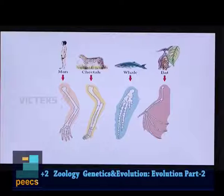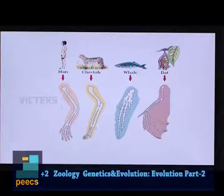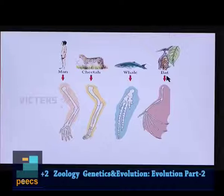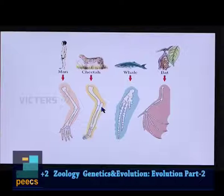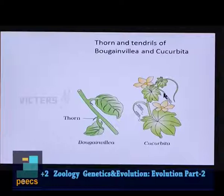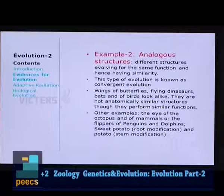Here you can see the forelimbs of various mammals — the forearm of man, the foreleg of cheetah, the flipper of whale, and the wing of bat. From the outside they do not look alike, shown in different colors, but inside the bones have the same structure as discussed. That is why this is an example of divergent evolution. Similarly, the thorn of Bougainvillea and the tendril of Cucurbita both originated from axial buds. Homologous organs indicate evolution.